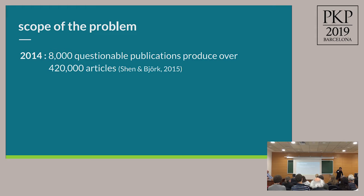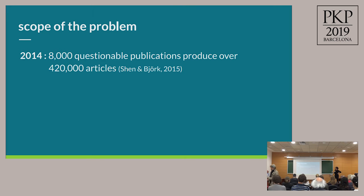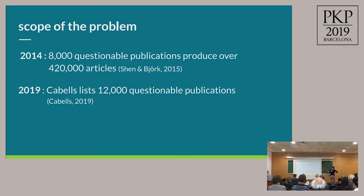Back in 2015, Shen and Bjork published the first large-scale analysis of the market characteristics and volume of the predatory publishing market. They found about 8,000 publications producing over 420,000 articles. Since then there hasn't been a replication or update to this study, so it is hard to say how that market has or has not grown.